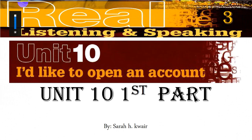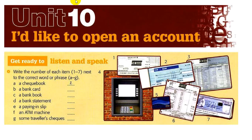Let's first get ready to listen and speak. Write the number of each item from 1 to 7 next to the correct word or phrase from A to G. We have words or phrases from A to G and we are going to connect these words to the pictures from 1 to 7. To be honest, I didn't know most of them, so I got back to the end of the book to connect what these things are.